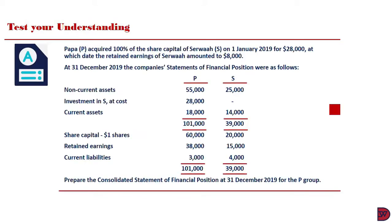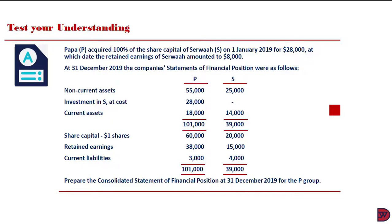So let me test our understanding. Papa, represented by P, acquired 100% of the share capital of Selwa, represented by S, on 3rd January 2019 for $28,000, at which date the retained earnings of Selwa amounted to $8,000 — meaning Selwa had begun operating before Papa came in to acquire it and had accumulated profits worth $8,000 to the date of the acquisition.